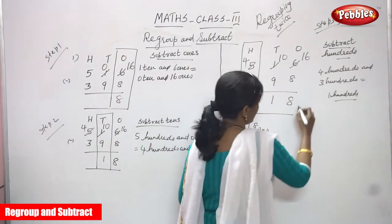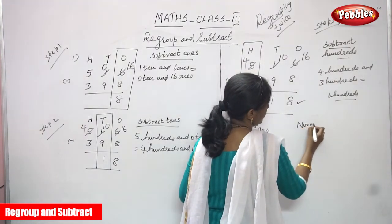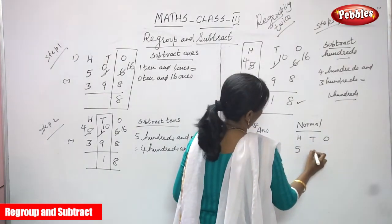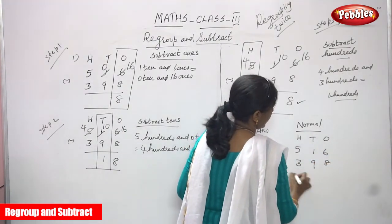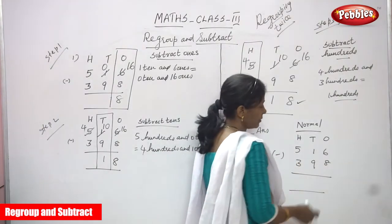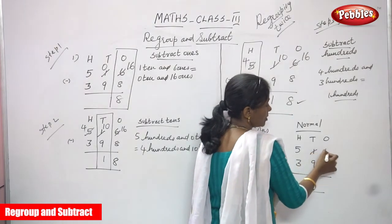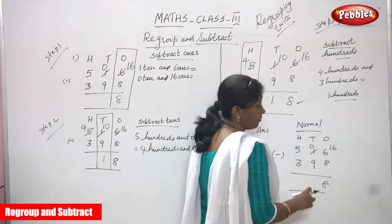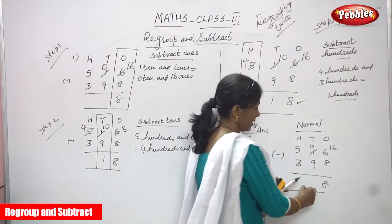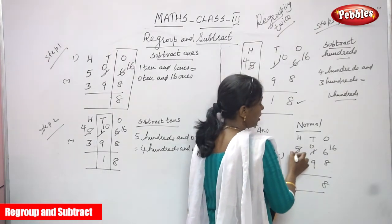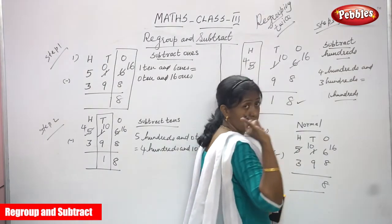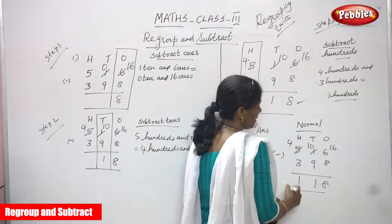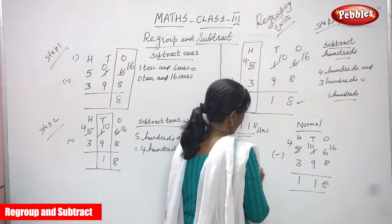You can verify this answer using the normal method. H T O: 516 minus 398. Six minus 8 — 6 is not enough, borrow from tens: 6 becomes 16, 1 becomes 0. 16 minus 8 equals 8. Then 0 minus 9 — borrow from hundreds: 0 becomes 10, 500 becomes 400. 10 minus 9 equals 1. Then 4 minus 3 equals 1. The answer is again 118.